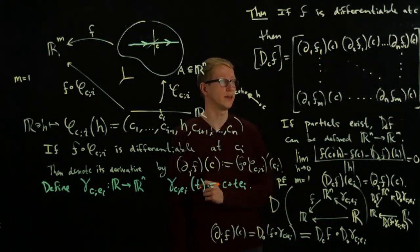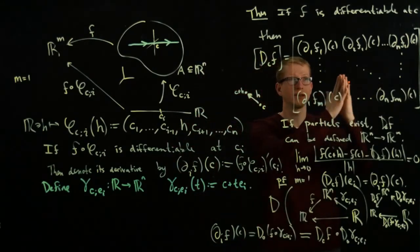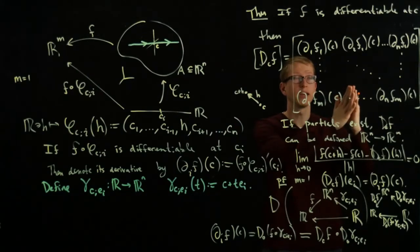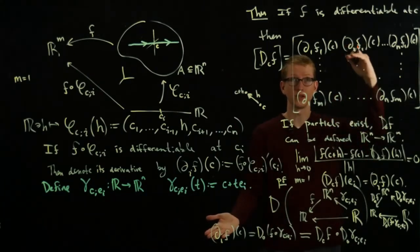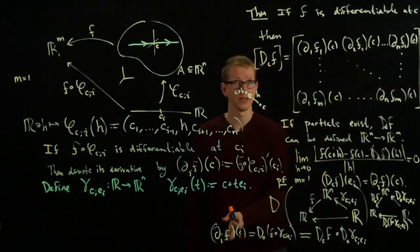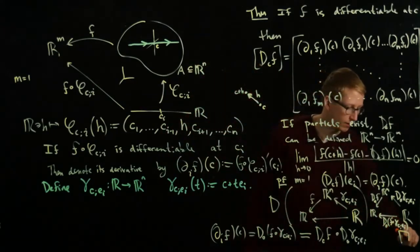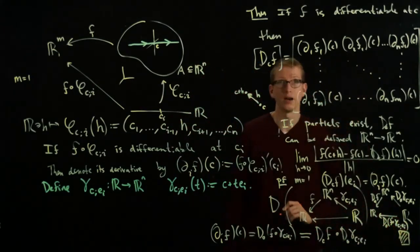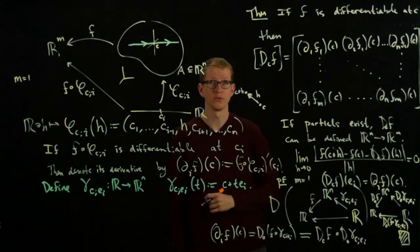If I plug in the vector 1, by the earlier comment I made, this gets sent to the vector e_i. Then e_i gets eaten up by the linear transformation D_C F. This exactly says I'm looking at the i-th column, and the i-th column in the case where m equals 1 is just a single entry—that's exactly this partial derivative here.